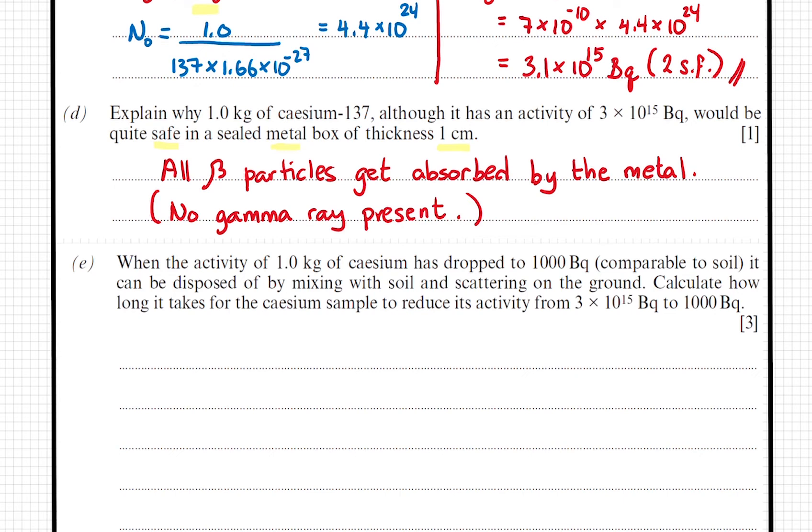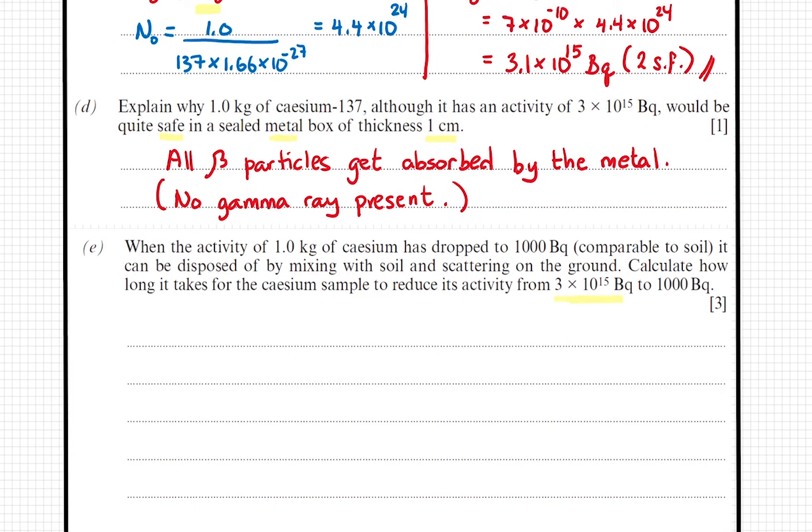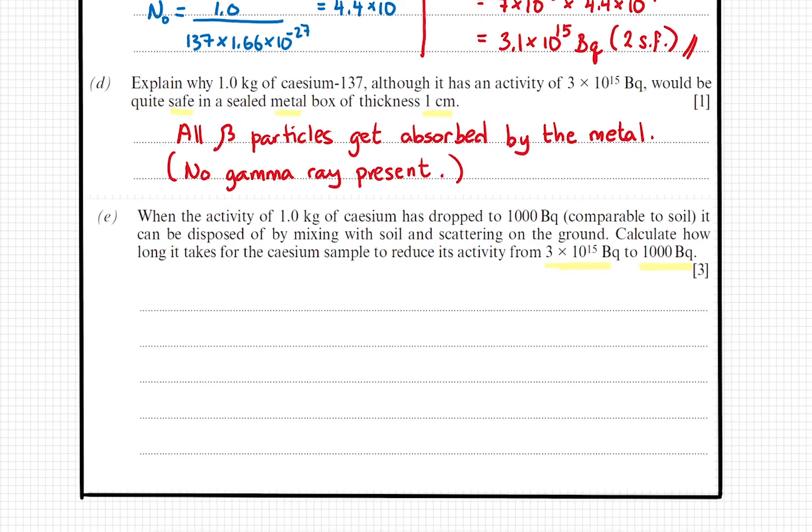The final section wants us to calculate how long it takes for cesium sample to reduce its activity from 3 times 10 to the power of 15 Becquerels to 1,000 Becquerels. Let's write down the variables and the unknown first. The initial activity is 3 times 10 to the power of 15 Becquerels, and the activity at time t is 1,000 Becquerels. And we want to find time t.